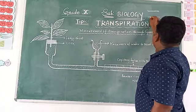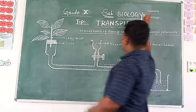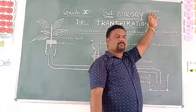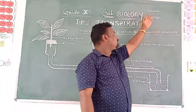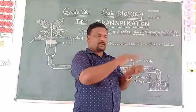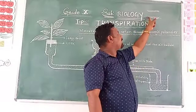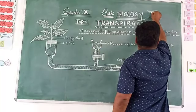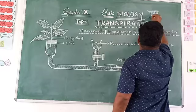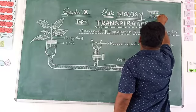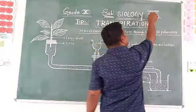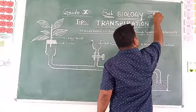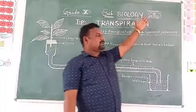In the cross-section — the transverse section — when the thin section from a leaf is prepared on a slide and observed in the microscope, both the upper and lower epidermis of the leaf appear. We can also see the cuticle. In addition, we can see cells arranged without leaving intercellular space — we call these cells palisade parenchyma.